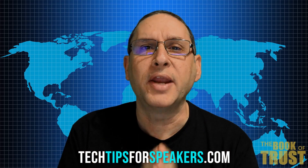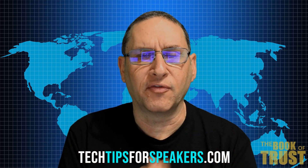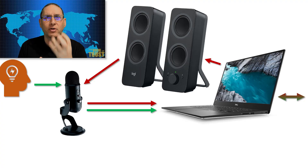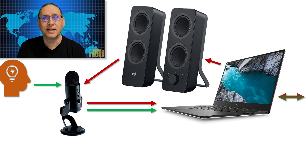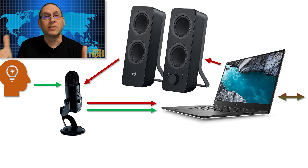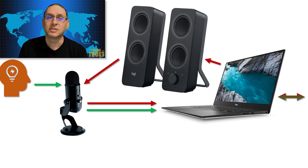Why do we have echo? When we communicate over video, there are two elements of audio. One is the microphone, which picks up our voice and sends it through the software over the cloud to the person on the other side. Then we have speakers, which let us hear what the people on the other side say.